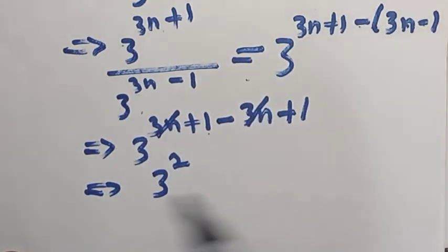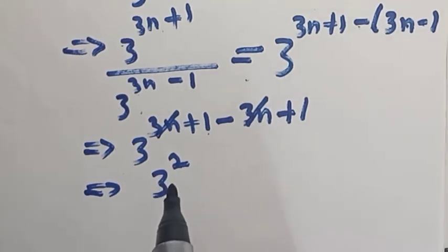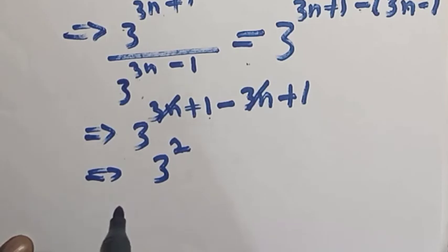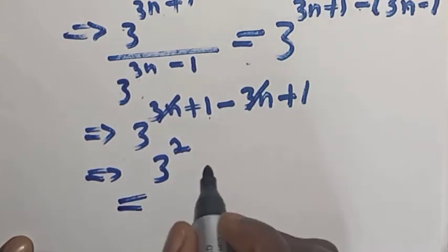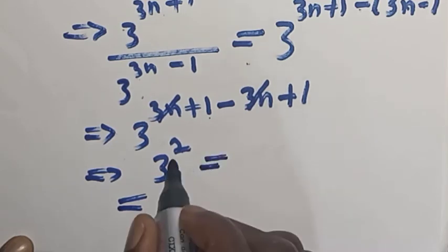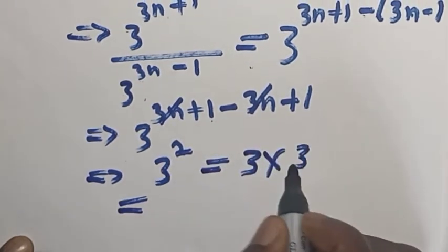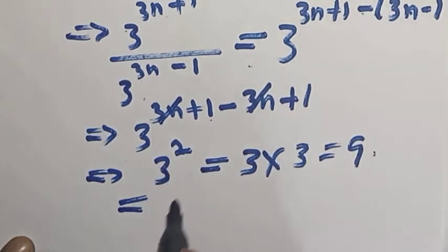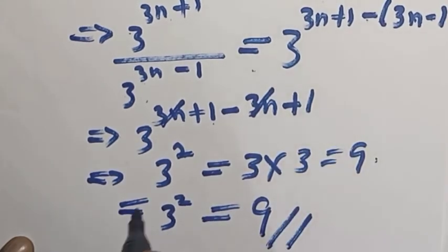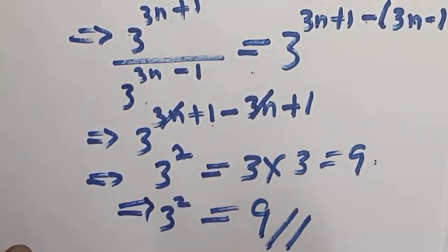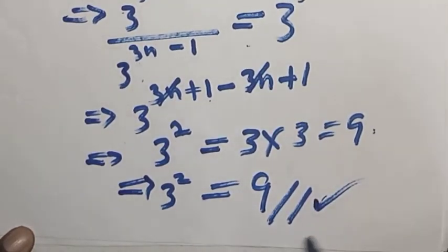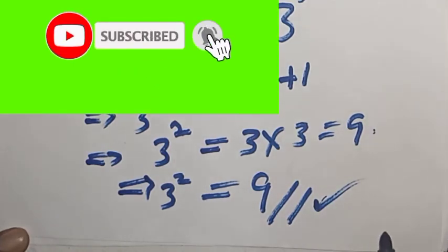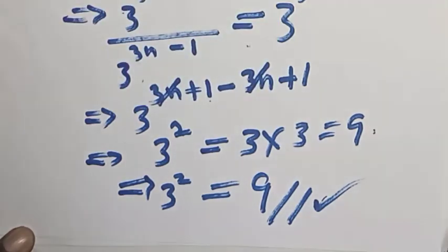The 3n terms cancel to zero, and we are left with 1 plus 1 which equals 2. So we have 3 raised to power 2. Our final answer is 3 raised to power 2, which is the same as 3 times 3, equal to 9. I hope you understand. Please don't forget to like, share, comment and subscribe for more videos on mathematics and statistics. Thank you!